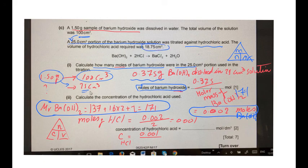He is asking here about the concentration of hydrochloric acid. The first step after calculating the moles of barium hydroxide, you need to get the moles of HCl.